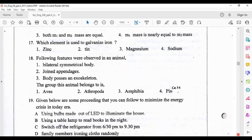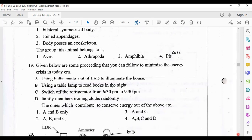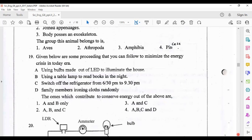Given below are some proceedings that you can follow to minimize the energy crisis in today's era. The ones which contribute to conserve energy out of the above are: A, using bulbs made out of LED to illuminate the house, correct; B, using a table lamp to read books in the night, correct; C, switch off the refrigerator from 6:30 PM to 9:30 PM, correct; D, family members ironing clothes randomly is wrong. If we iron clothes randomly more current is wasting, so A, B, C only correct, answer number two.